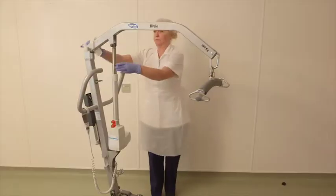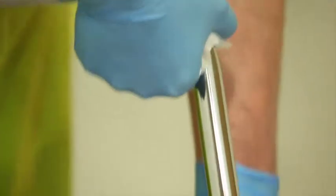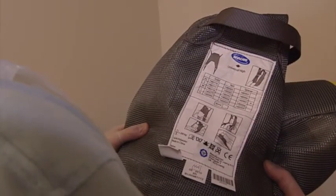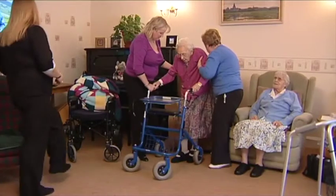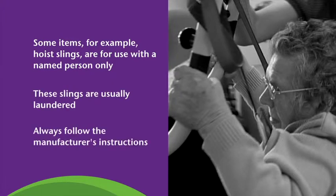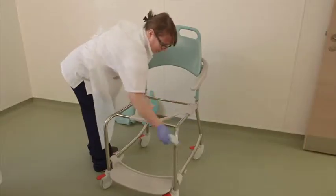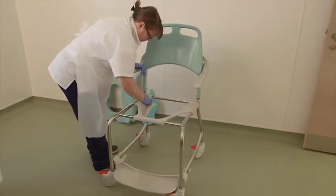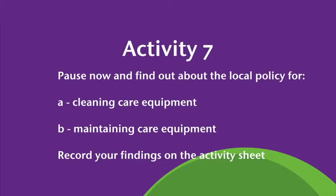Keeping reusable items clean, fit for purpose and well maintained is everyone's responsibility in order to prevent the spread of infection. Most items of equipment will have a specific cleaning procedure and an agreed schedule for its frequency, which you should find out about. Some items such as hoist slings are for use with a named person and no other individuals; these slings are usually laundered. Commodes are used in care environments – the contents of commode pots are disposed of according to local policy and must be thoroughly cleaned after each use. Activity 7: Pause now and find out about the local policy for cleaning and maintaining care equipment, and record your findings.